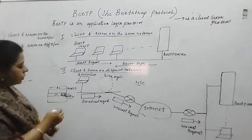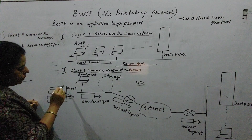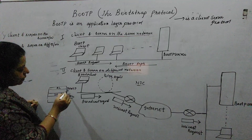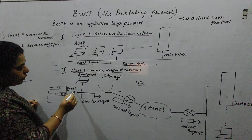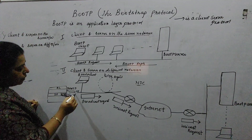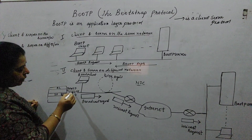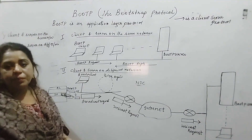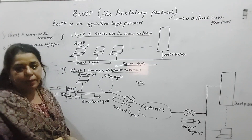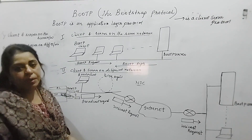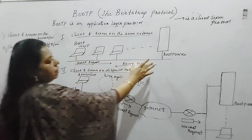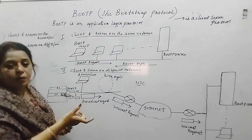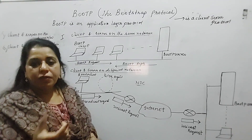Since BOOTP is an application layer protocol — the topmost layer — if it wants to know its logical address, the message from the application layer gets embedded in the transport layer protocol. UDP is the one used here. The BOOTP request is encapsulated in a UDP packet, and the UDP packet is further encapsulated in an IP packet at the network layer. The source port number is 68 and the destination port number is 67.